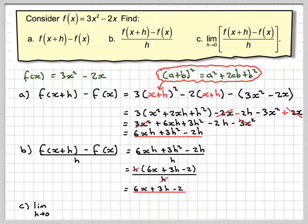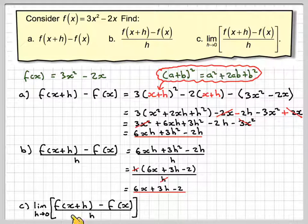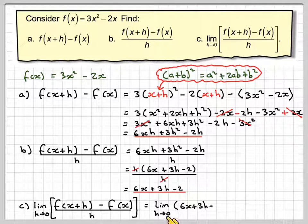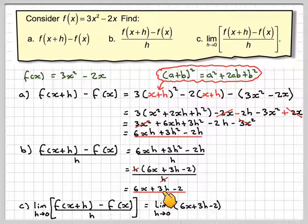Now for the last part, we take the limit as h goes to 0 of [f(x+h) - f(x)]/h. That's the limit as h goes to 0 of 6x + 3h - 2.